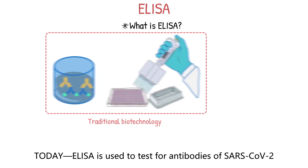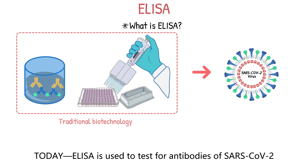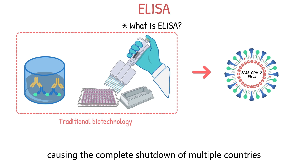Today, ELISA is used to test for antibodies of SARS-CoV-2 or COVID-19 in response to a global pandemic causing the complete shutdown of multiple countries.